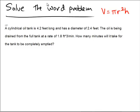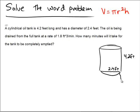So in our first example here, we have a cylindrical oil tank that is 4.2 feet long and it has a diameter that happens to be 2.4, so that's the distance all the way across. And oil is being drained out of it at a rate of 1.8 cubic feet per minute.